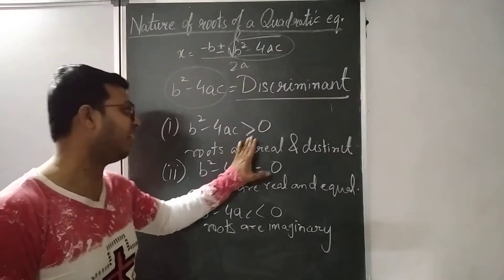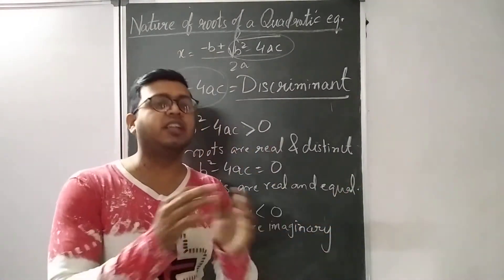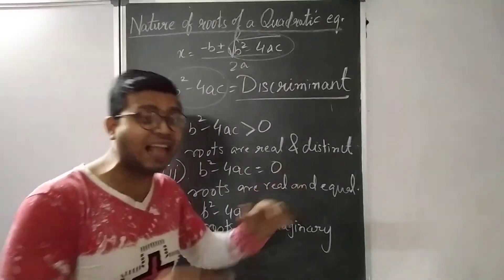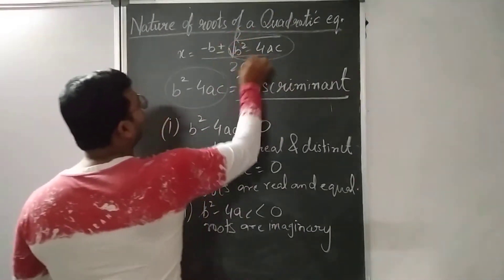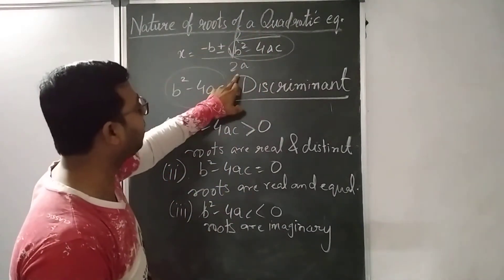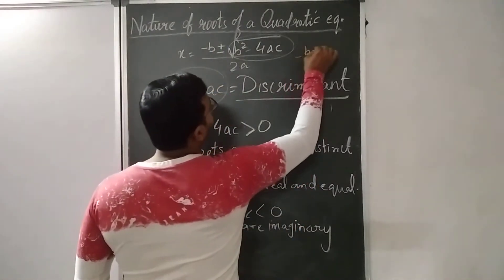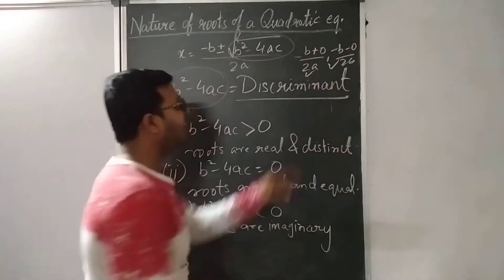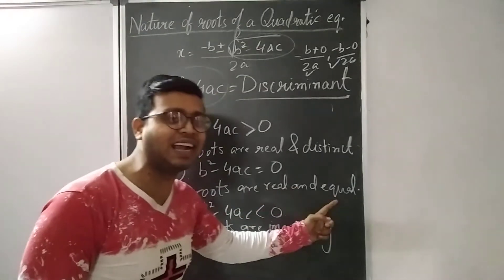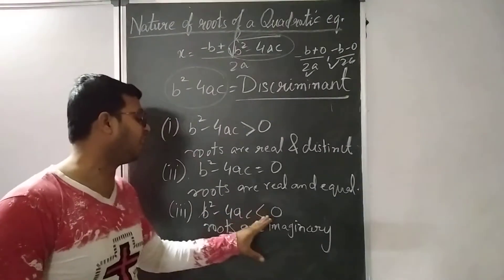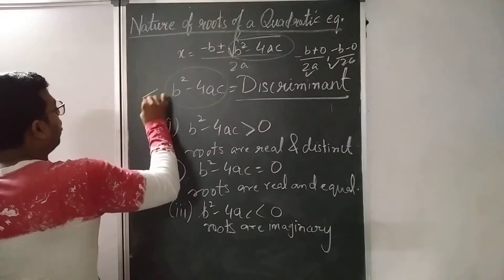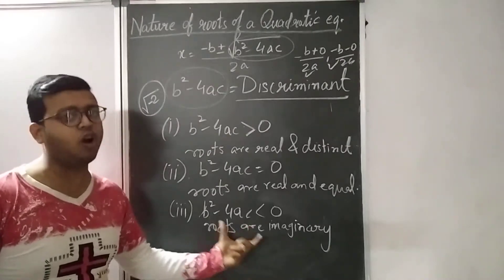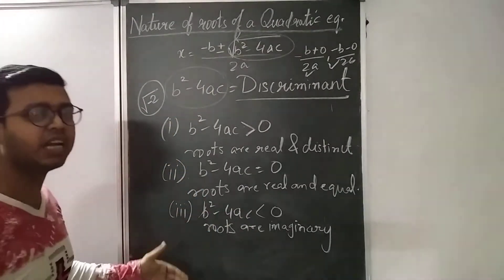If B² − 4AC > 0, then the roots are real and distinct — distinct means different values. If B² − 4AC = 0, then roots are real and equal, because placing 0 gives both solutions as (−B + 0)/2A and (−B − 0)/2A, so the value is the same in both cases — that is why it is called real and equal. If B² − 4AC < 0, that means the square root of a negative number, which gives imaginary numbers, so roots are imaginary or not possible.